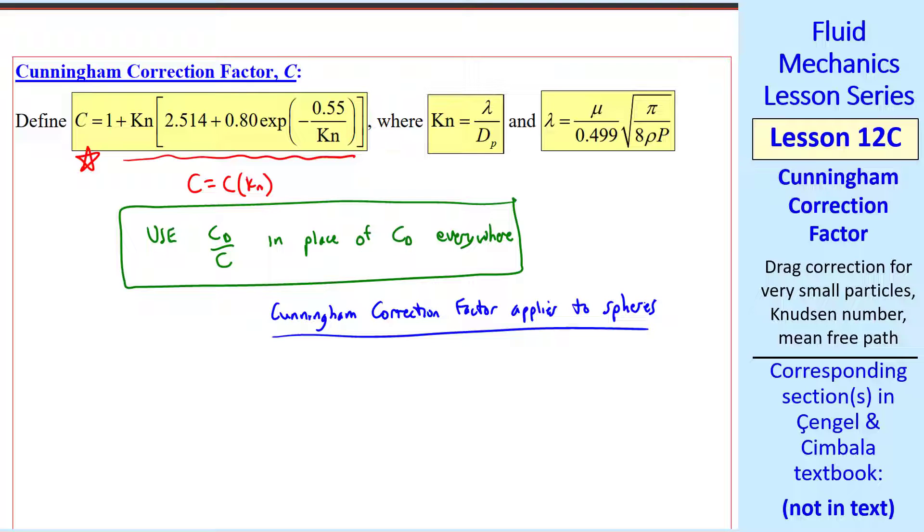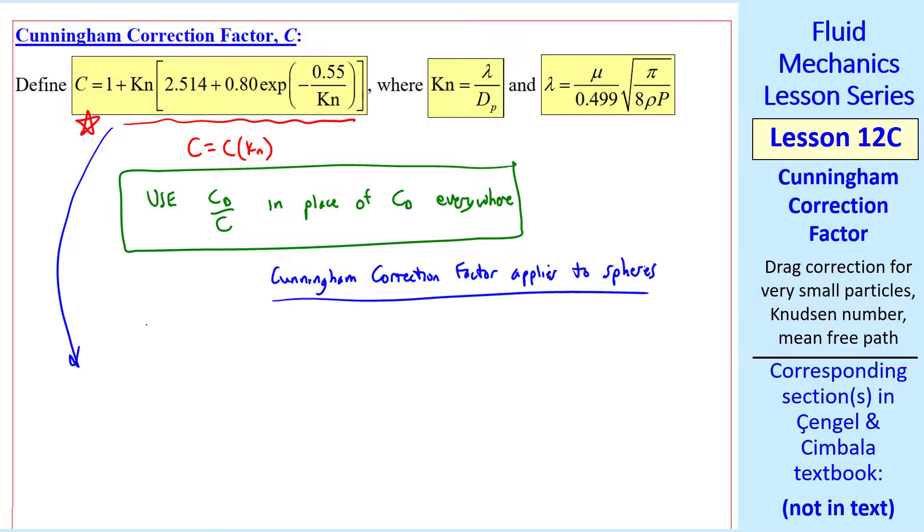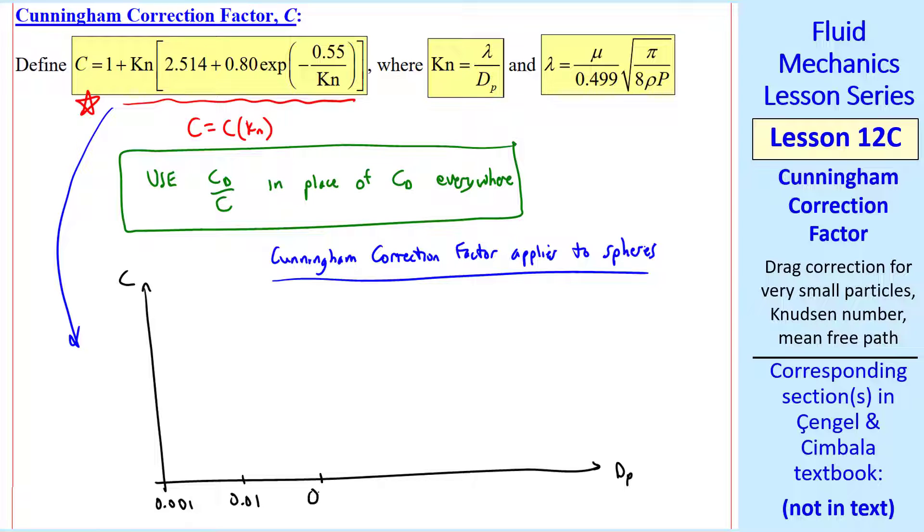This is similar to what we did with pipes when we defined a hydraulic diameter. If we plot this equation for C as a function of dp, and I'll use a log scale for particle diameter, and these are in microns, by the way, C itself is non-dimensional.